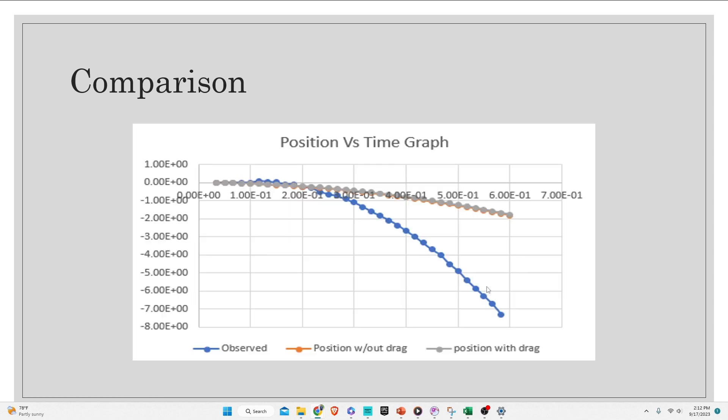Here are all three lines plotted side by side. Looking at the graph, we can tell that the model with drag is the best curve we could have because it's more accurately predicted. Adding in the drag force instead of having it without it, it would make the data more realistic, and we are able to compare that line with our observed line.